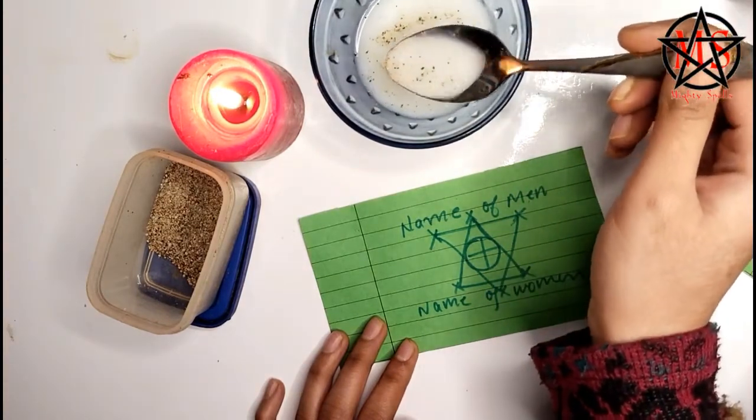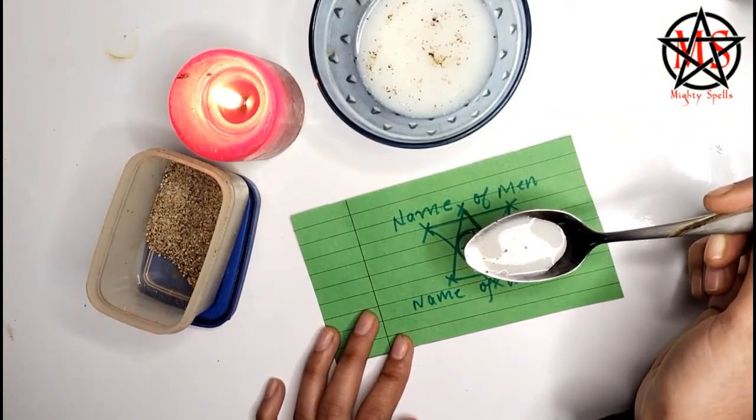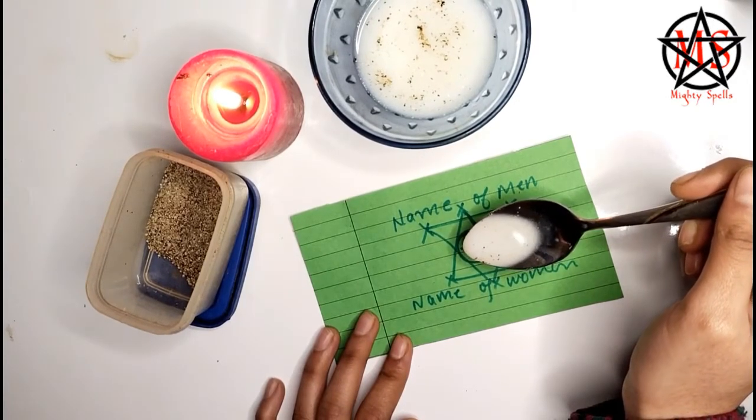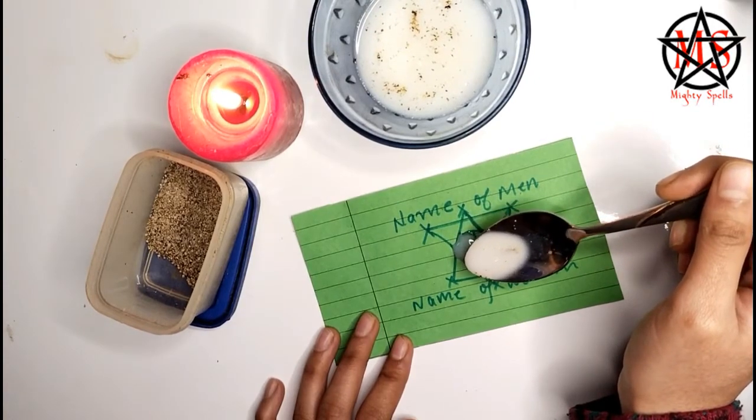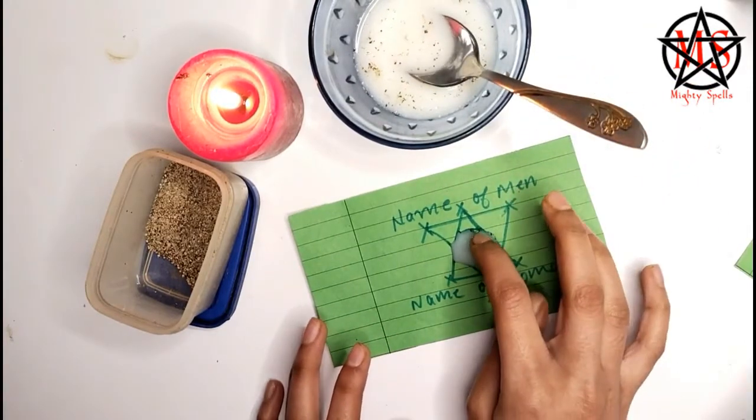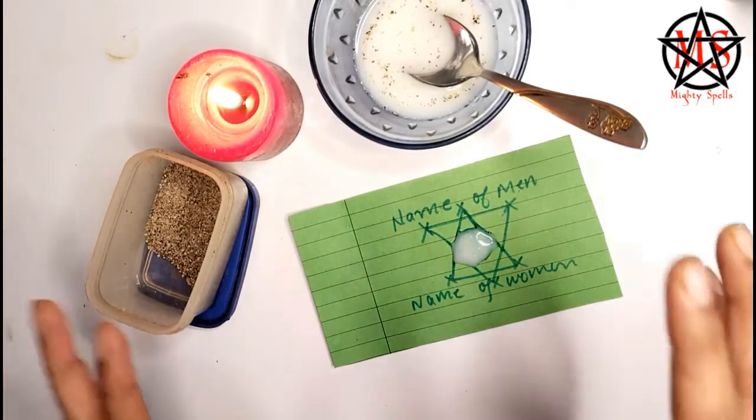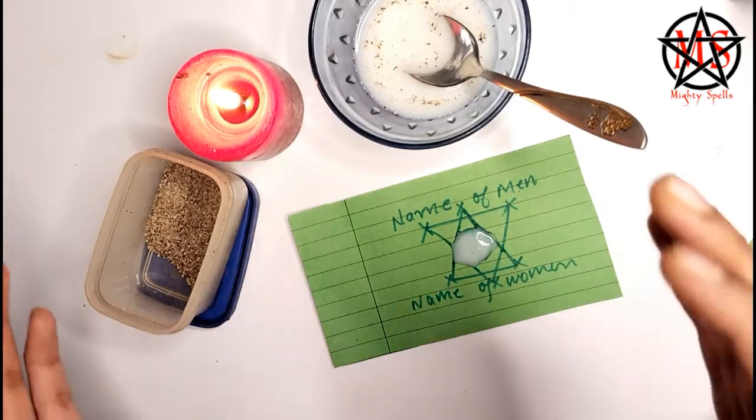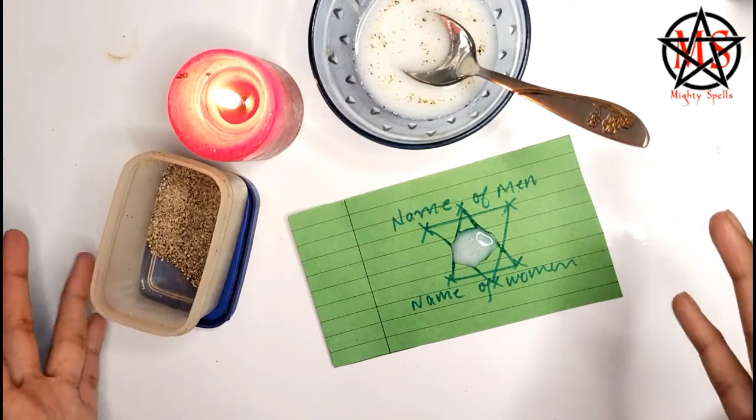Now take the mixture of milk and black pepper, crushed black pepper, and pour over the circular middle like this. And now you have to say break up, break up, break up. You have to say this for 33 times and after that, after you finish saying it 33 times, your spell will be done.